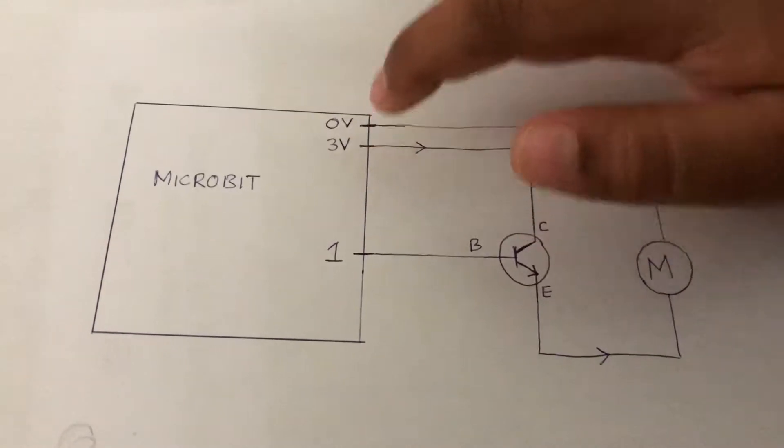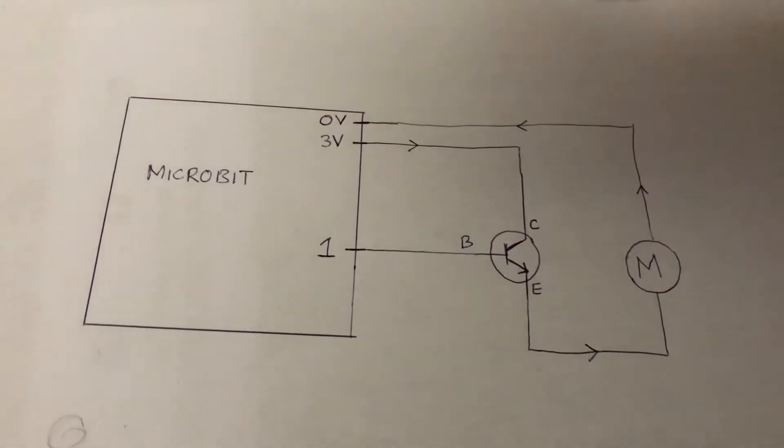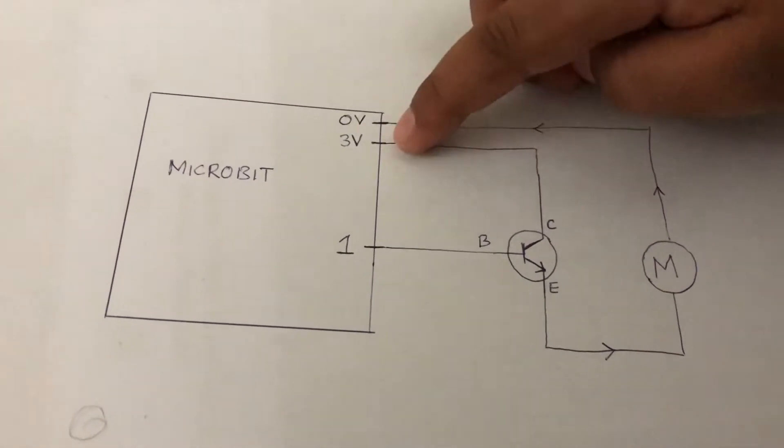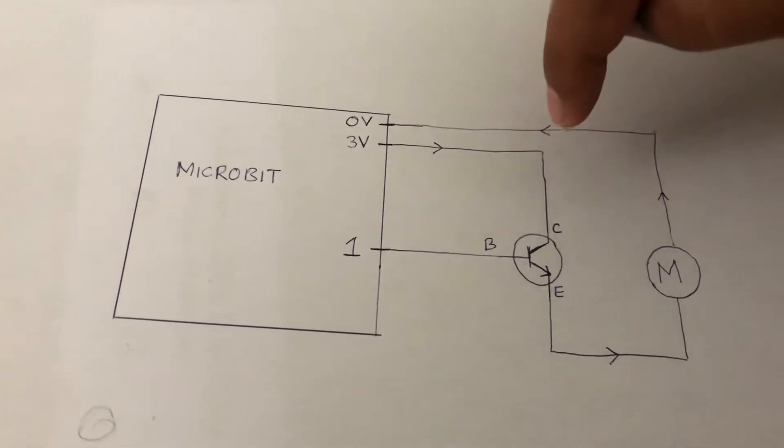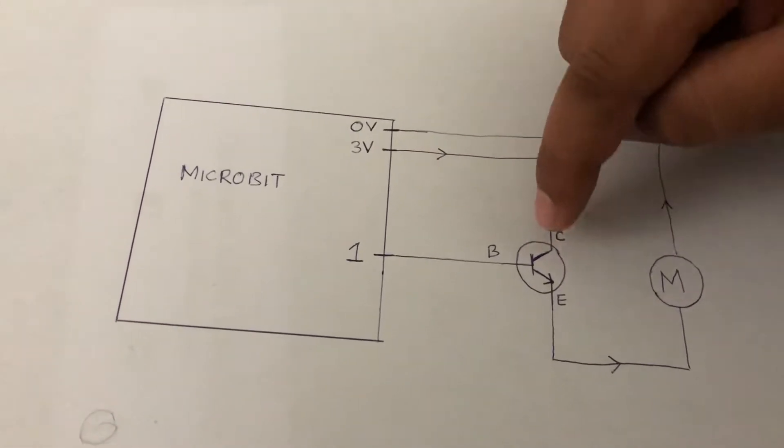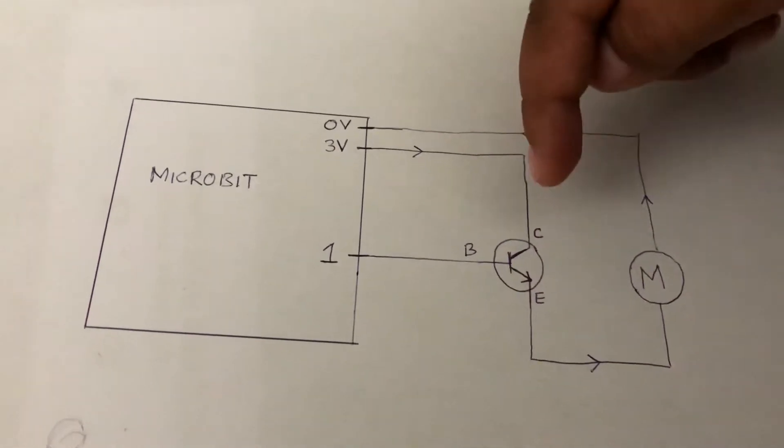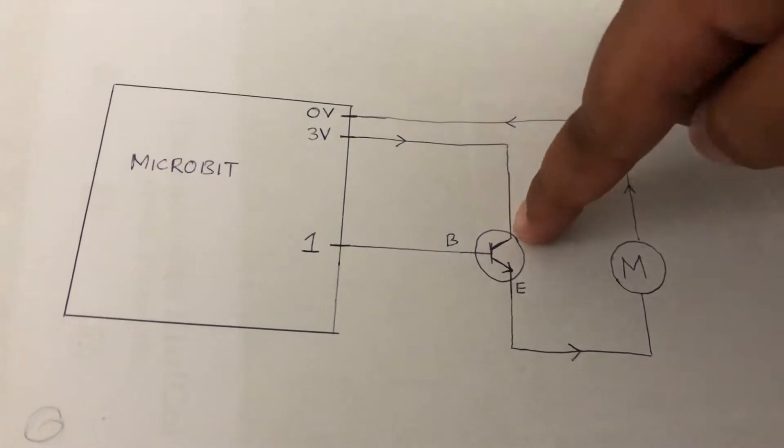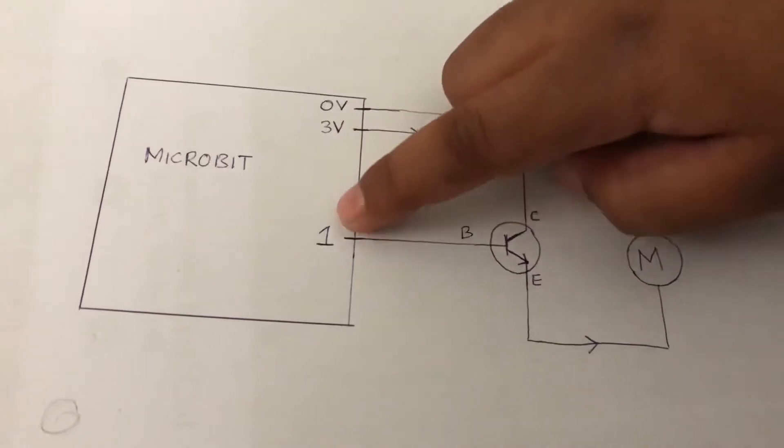As you can see, we have a 3V power supply, or what can also be called 3 volts, and it's sending 3 volts of current through this wire and into the transistor, or to be specific, the collector leg of the transistor.